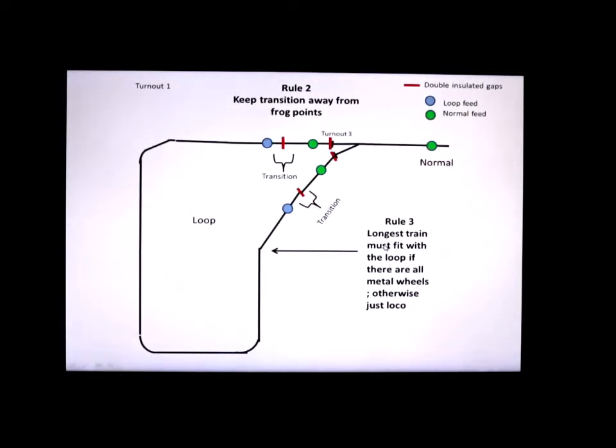Rule number two. Keep the transition point between the loop feed and the normal feed away from the frog points. So what do I mean by that? Here's the turnout. These are the frog legs of the turnout. I have a double insulated gap here and another one about a foot away. Same on the other leg of the turnout. One here and one here.